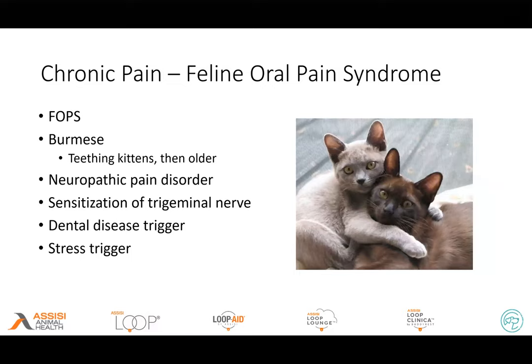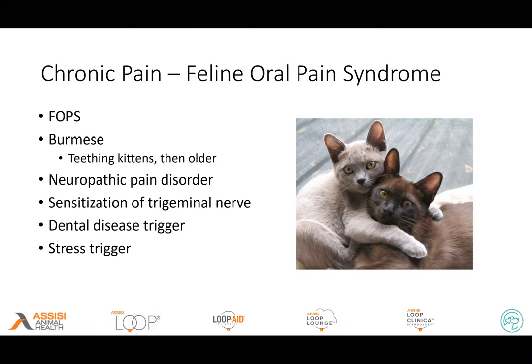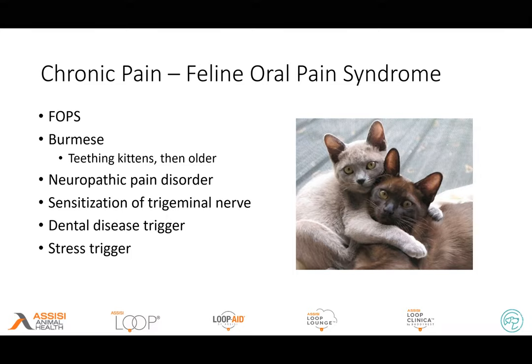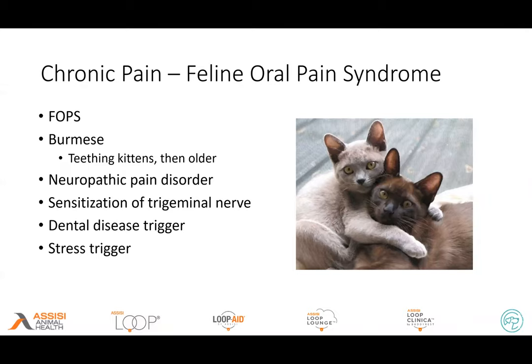Another chronic pain syndrome we see is kind of unique in cats: feline oral pain syndrome. A strong percentage of these — 80% plus — are Burmese cats. Initially it may be seen in kittens as they're teething, and once they get older it has been identified as a neuropathic disorder primarily with desensitization of the trigeminal nerve, which basically innervates all the teeth. Triggers include any type of dental disease, and since teething kittens go through that process in about two months, that's a pretty good trigger. As they're older, dental disease or different stresses can also trigger this pain syndrome.